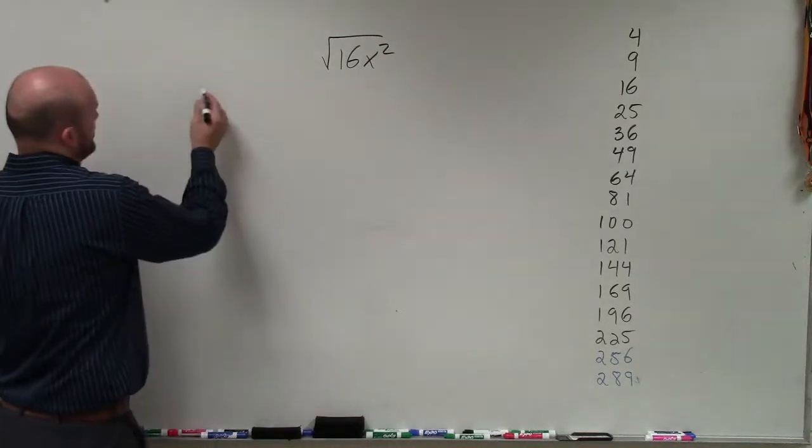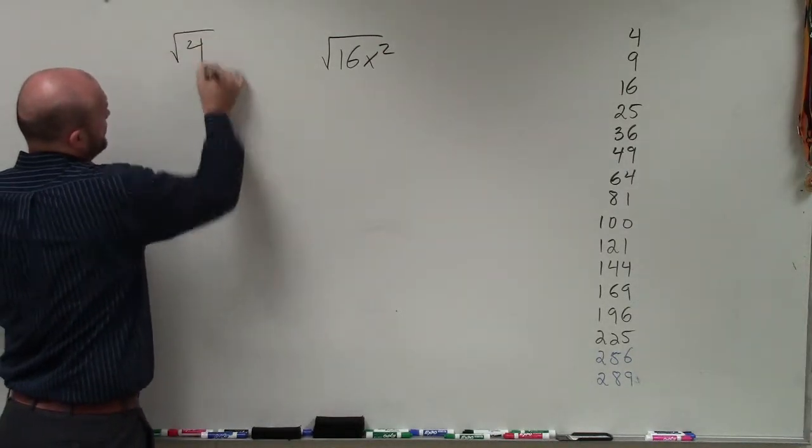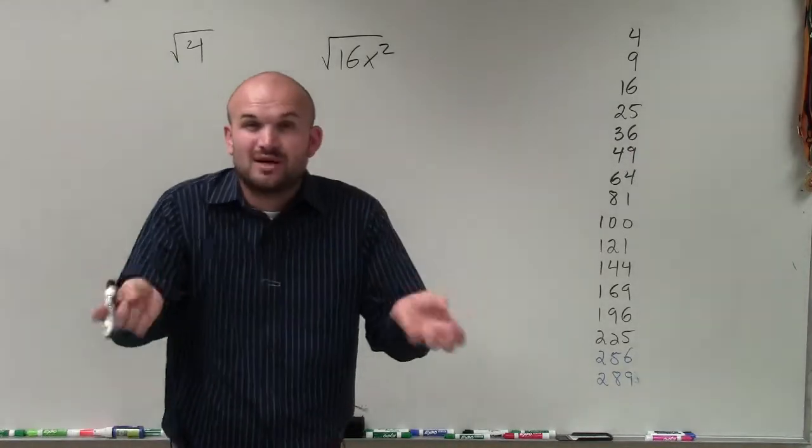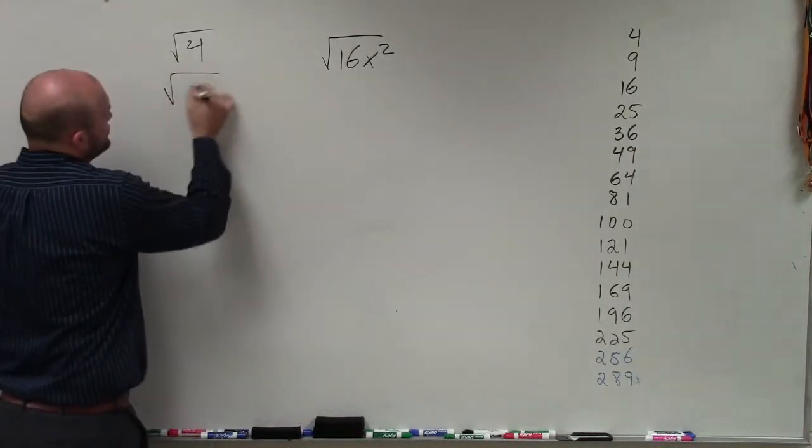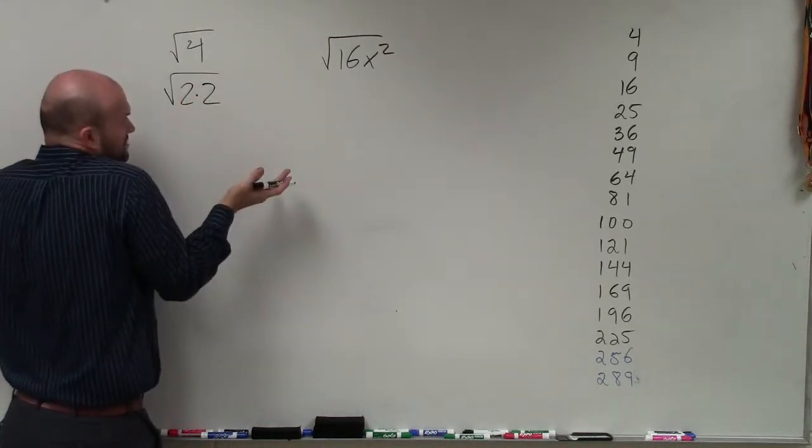So remember, when we're taking the square root of a number, for instance, the square root of 4, what we're basically asking is what number multiplied by itself gives us 4. And we broke down 4 into the square root of 2 times 2.